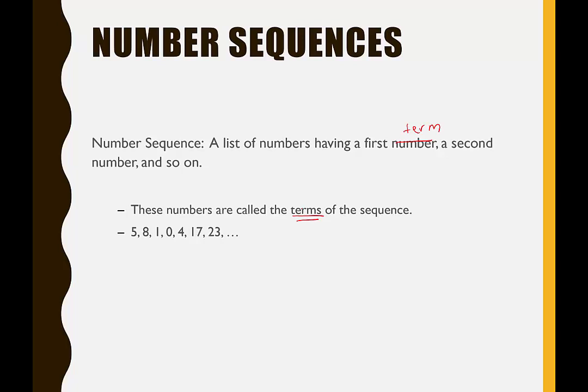So one example of a number sequence would be 5, 8, 1, 0, 4, 17, 23, and so forth. There is a first term, a second term, a third term. We get the idea.